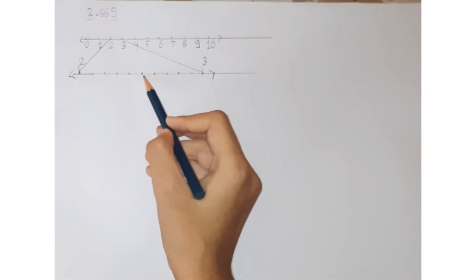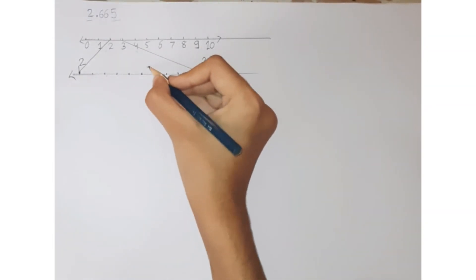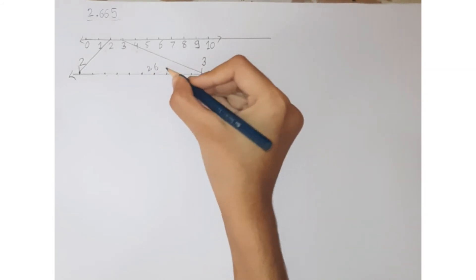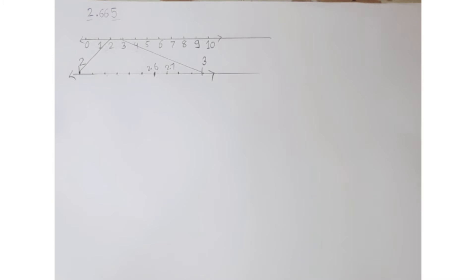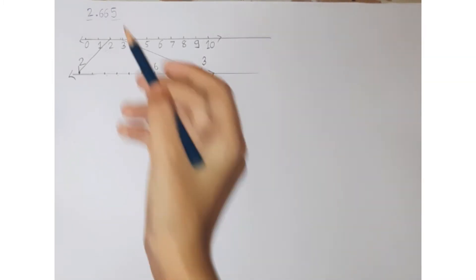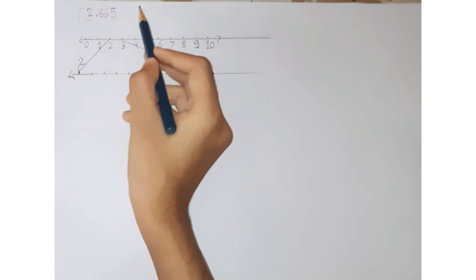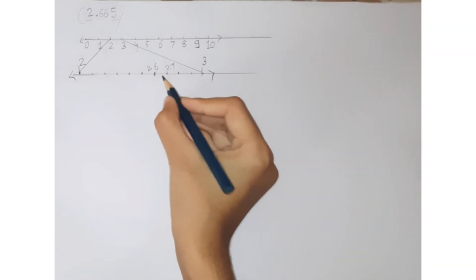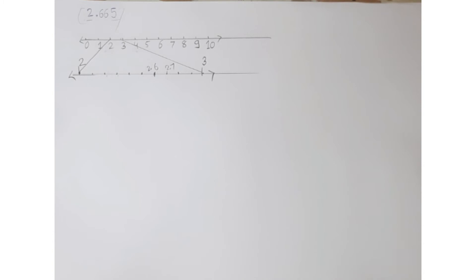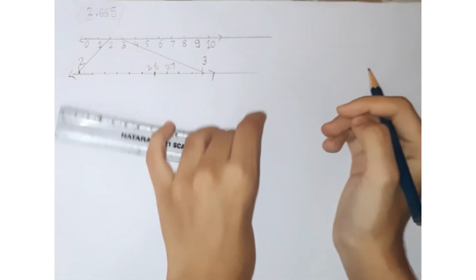So where it would be: here 2.1, 2.2, 2.3, 2.4, 2.5, 2.6, and here it is 2.7. So we know that 2.665 lies between 2.6 and 2.7. Here it was first lying between 2 and 3, then it lied between 2.6 and 2.7. Now we will further magnify this 2.6 and 2.7.